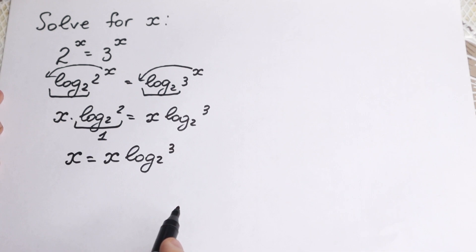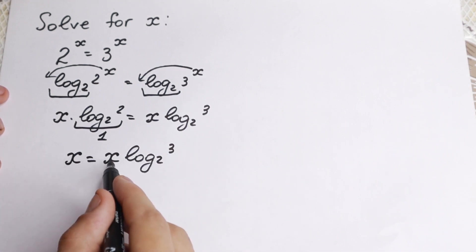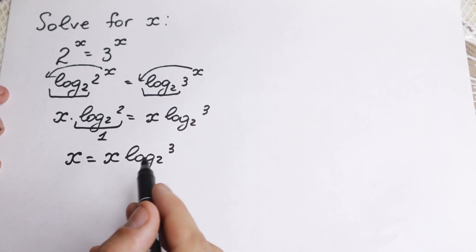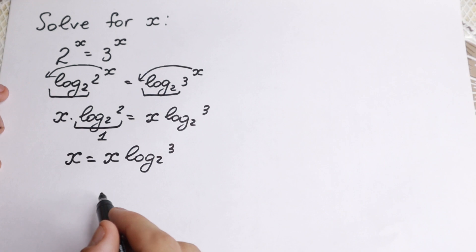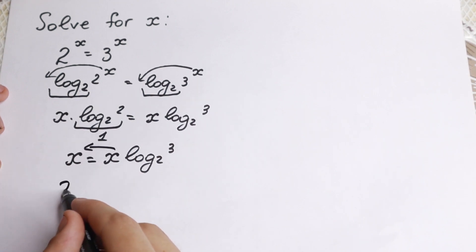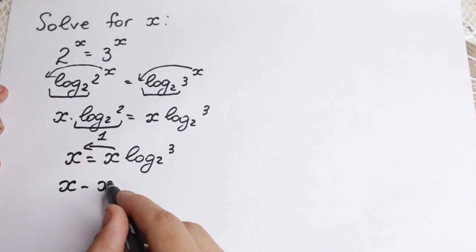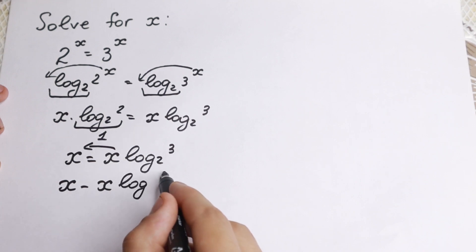Right now it's really good to see that x and x right here will be the same, so we need them on one side. Most students do this on the left. So let's bring this on the left hand side. We have x minus x times log 3 base of 2 equal to zero.